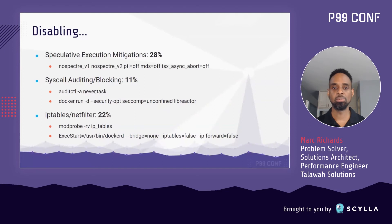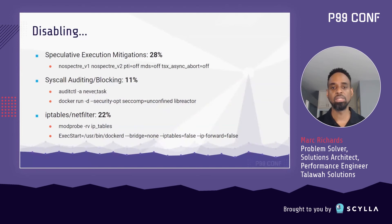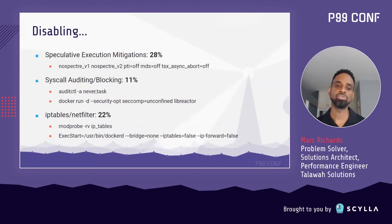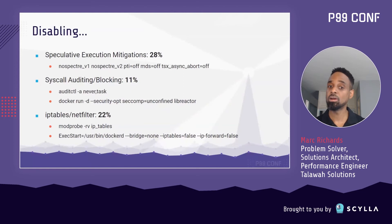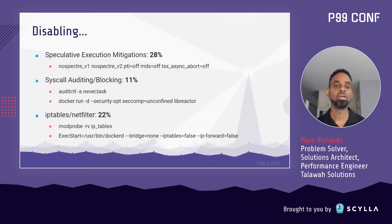Finally, we have iptables. Disabling iptables is not necessarily a huge deal if you're using cloud-native firewalls, but Docker relies on it heavily for network address translation. So for the purposes of this test, I disabled iptable support both in the kernel and the Docker daemon. I can get away with that because I'm running a single container that's directly attached to the host network, so there's no need for it.